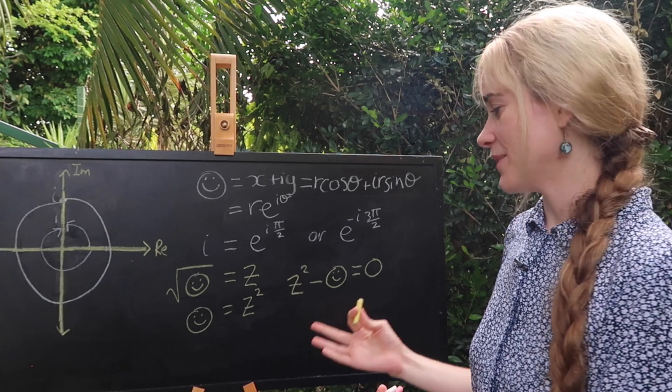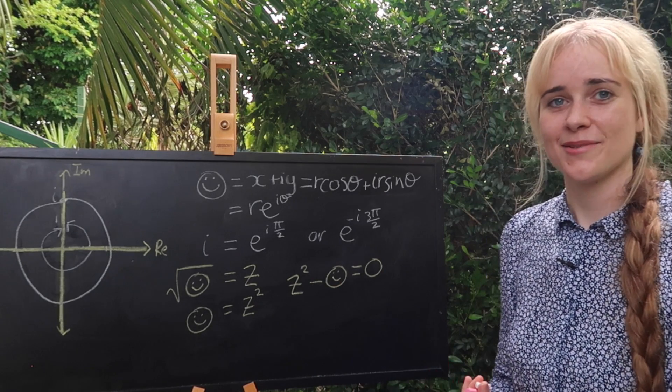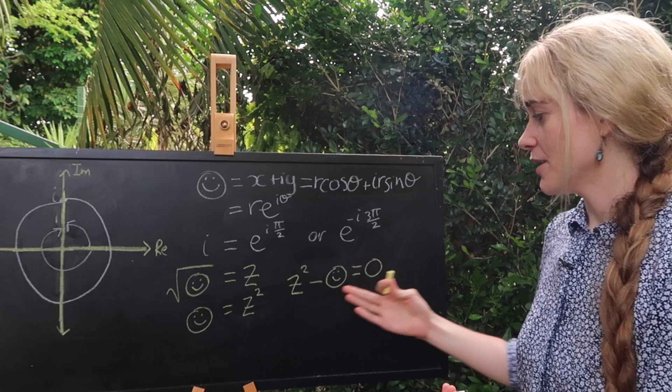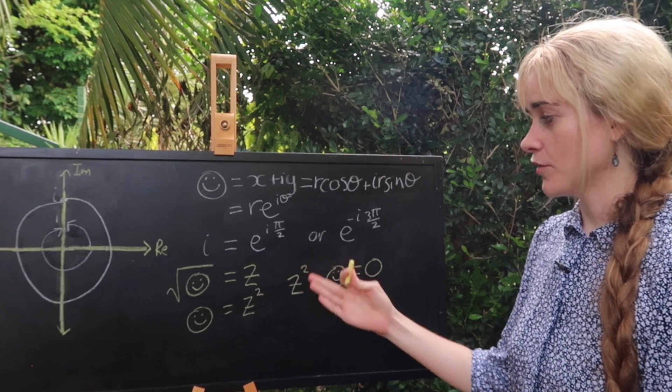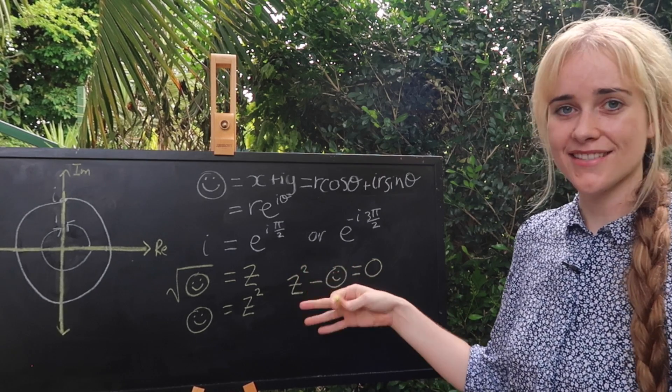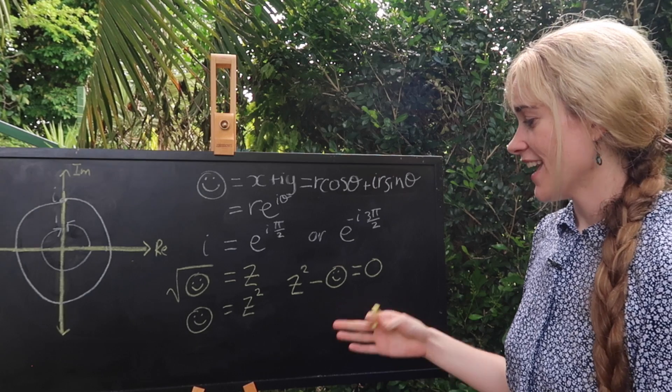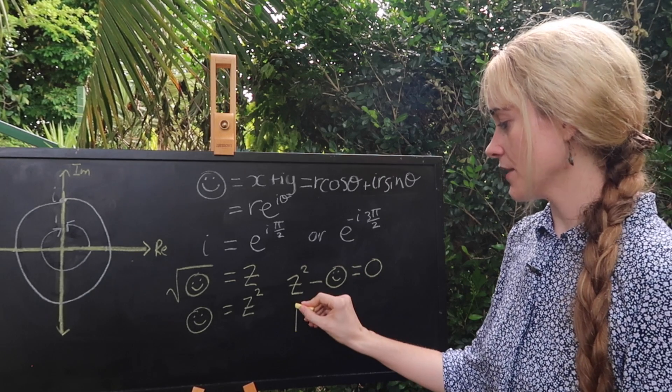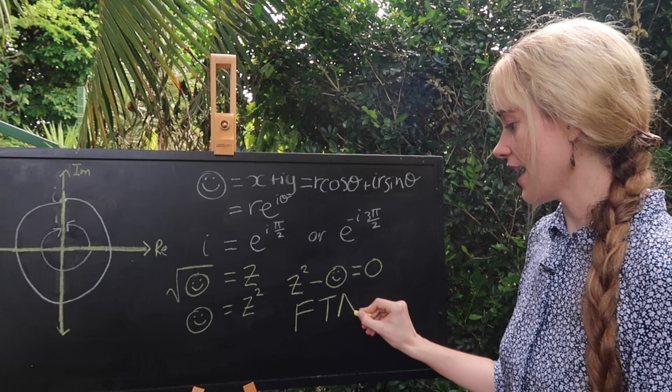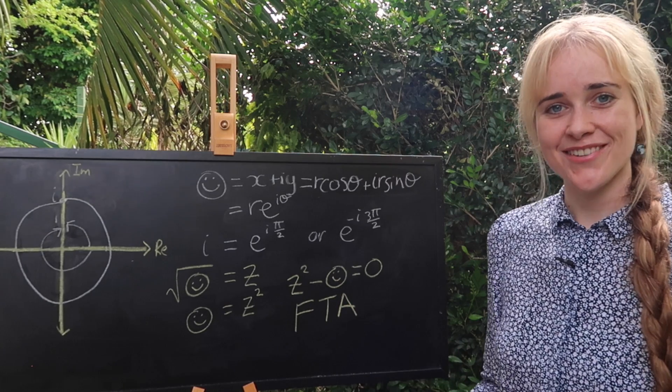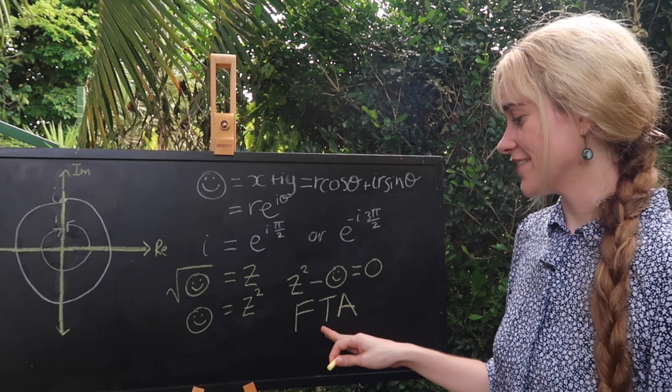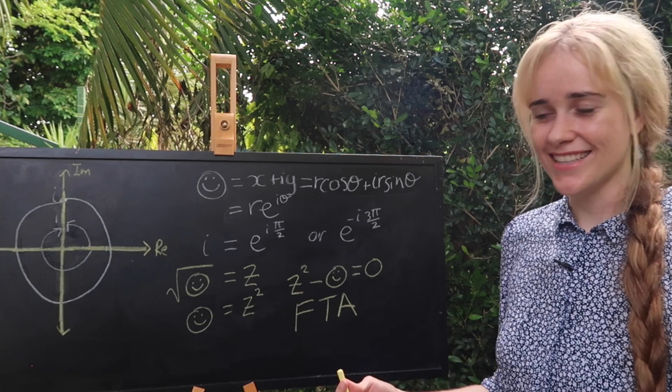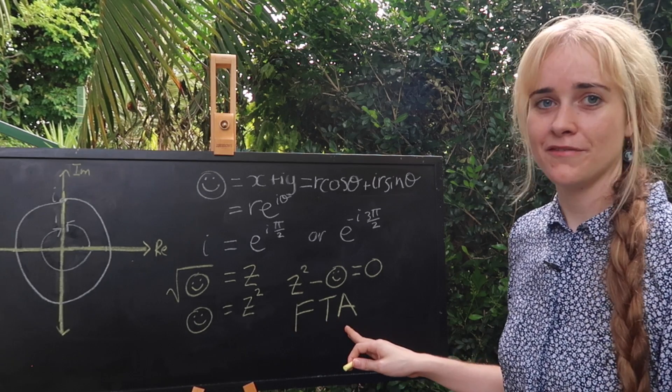Now this might not look like much but it's actually kind of important for us. What we have here is a polynomial with a degree two, it's a quadratic, and that means that we can use something called the FTA. Now I know what you're thinking but this is not friendly trees anonymous, instead this is the fundamental theorem of algebra.